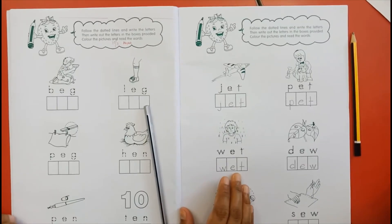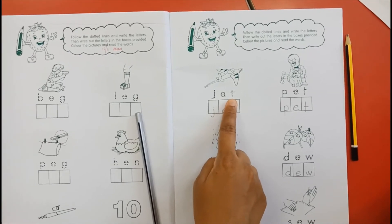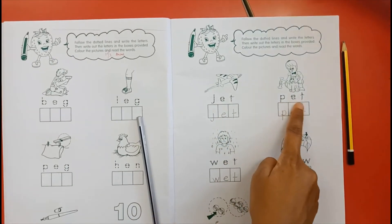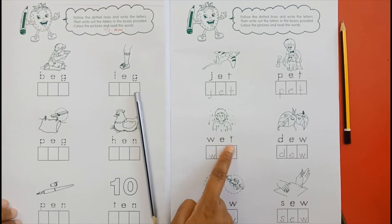Now we read one more time. J-E-T. Jet. P-E-T. Pet. W-E-T. Wet.